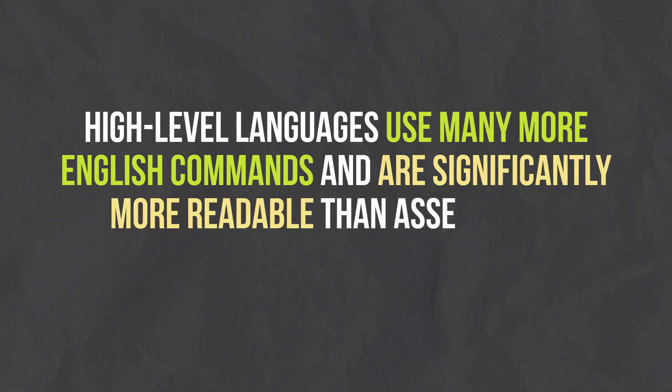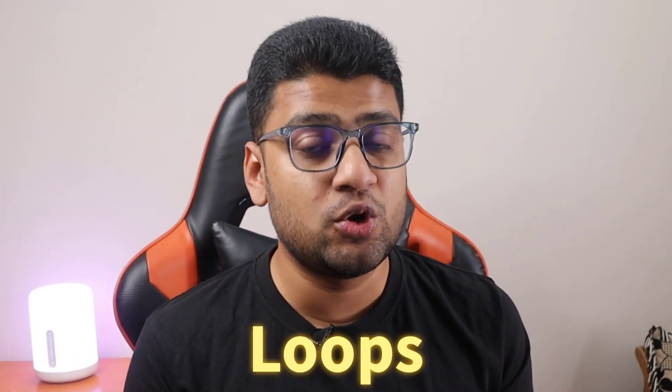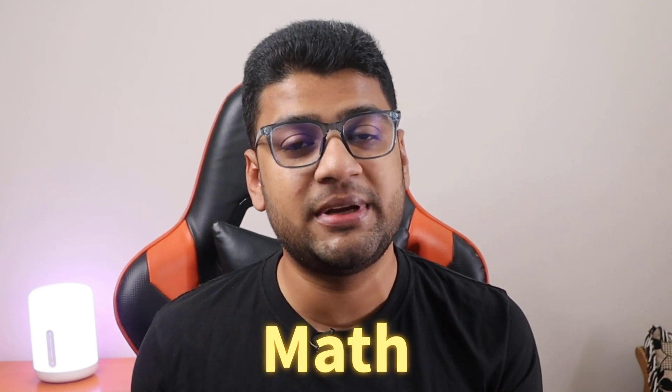What is a high-level programming language? High-level languages use many more English-like commands and are significantly more readable than assembly or machine language. Many high-level languages have built-in commands that help the programmer write loops, functions, mathematics, and more. Some newer high-level programming languages are scripting languages, meaning they are not compiled into machine language until just before the code is executed at runtime. Python, JavaScript, PHP, Ruby, and Bash are all scripting languages.